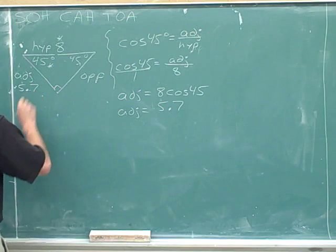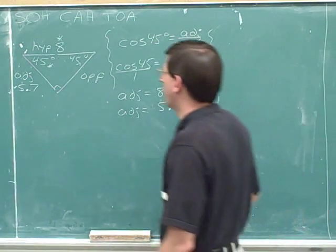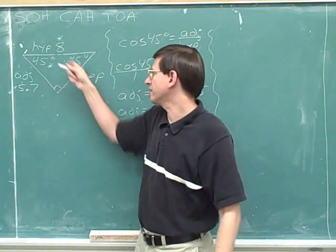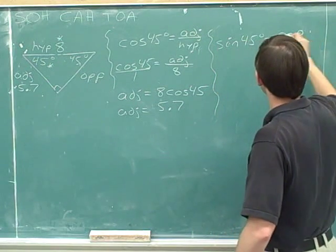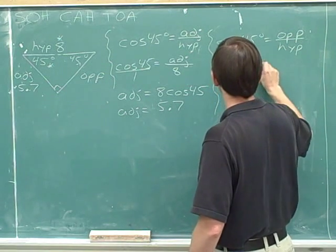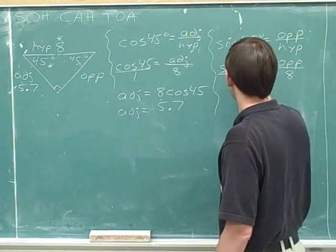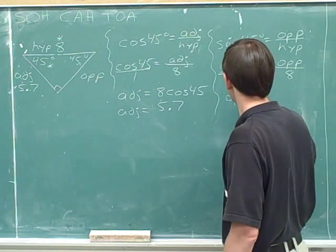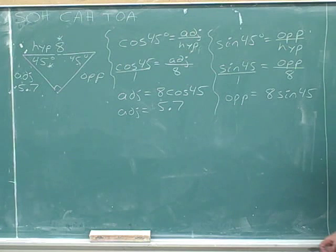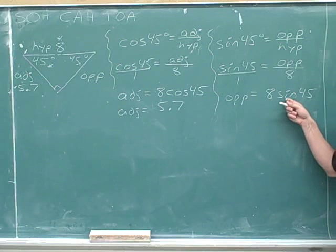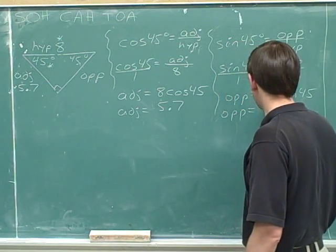So the adjacent side is 5.7. Now I need to find the opposite side. I'm going to use the hypotenuse to find it, so I need a trig function involving the hypotenuse and the opposite — that's the sine. We'll take the sine of 45 degrees, which equals the opposite side over the hypotenuse. The hypotenuse here has a length of 8. Cross multiplying, we get 8 times the sine of 45. The opposite side is the hypotenuse times the sine, which turns out to be approximately 5.7.